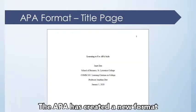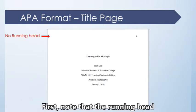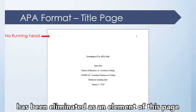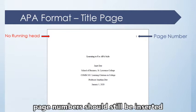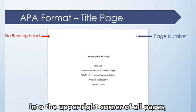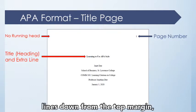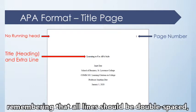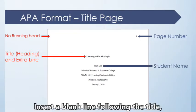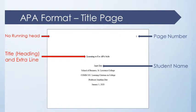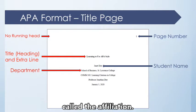The APA has created a new format for all student title pages. First, note that the running head has been eliminated as an element of this page and every page that follows. However, page numbers should still be inserted into the upper right corner of all pages, beginning with the title page. The title should appear three or four lines down from the top margin, is now in bold, and double-spaced lines should be maintained throughout. Insert a blank line following the title, then provide your name. On the next line, the APA has inserted a new requirement called the affiliation.